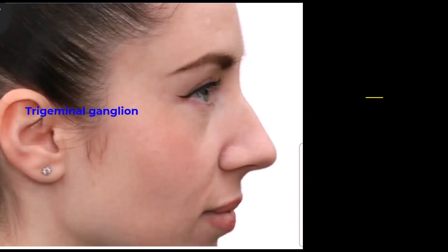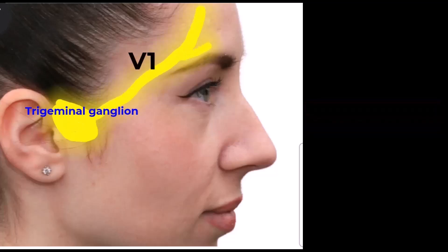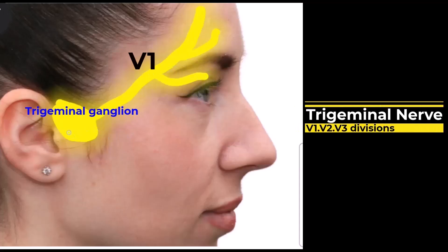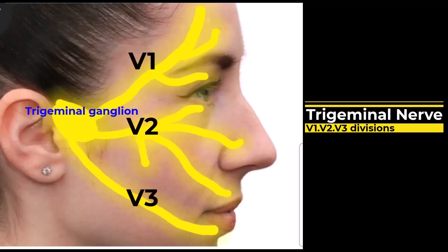The trigeminal nerve, after it exits from the brain, goes to a ganglion known as the trigeminal ganglion. From here, three divisions are formed: V1, V2, and V3. V stands for the Roman numeral five, so the fifth nerve has division 1, division 2, and division 3.